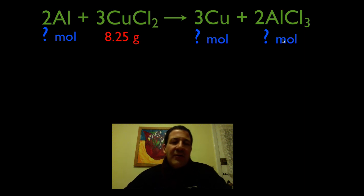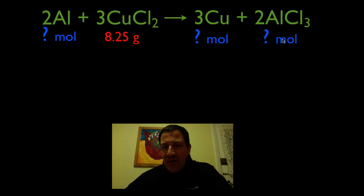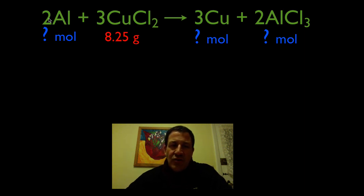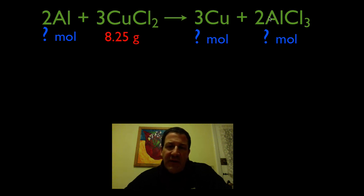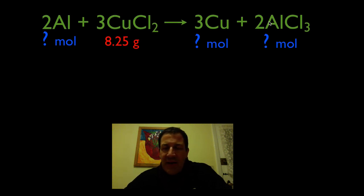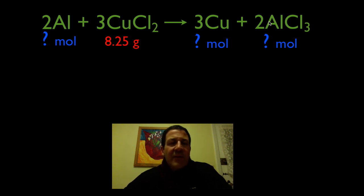We also want to know how many moles of copper and how many moles of AlCl₃ aluminum chloride we're going to produce. Please remember that the chemical equation is a molar relationship, not a mass or a gram relationship. It says that two moles of aluminum plus three moles of copper chloride will yield three moles of copper and two moles of aluminum chloride.